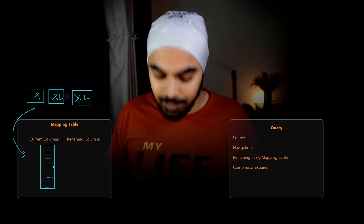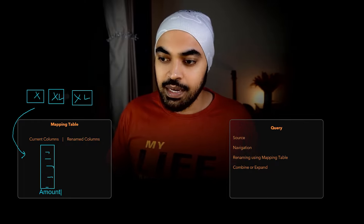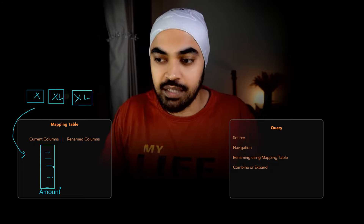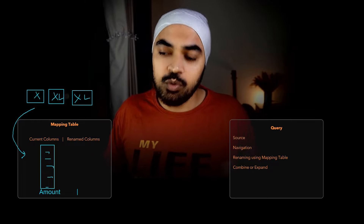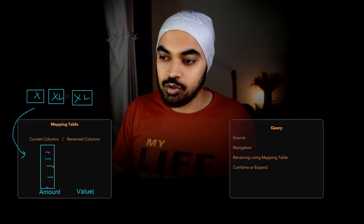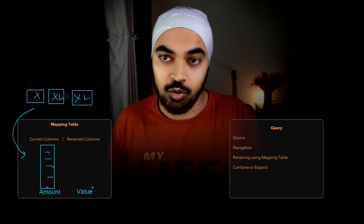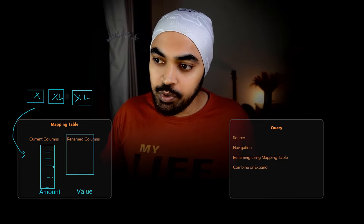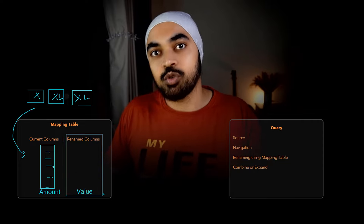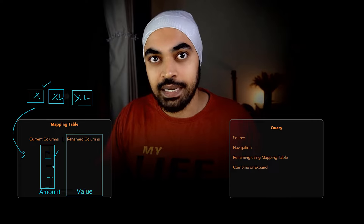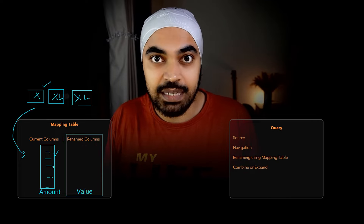Power Query automatically cannot know what you'd like to rename the column as, so you'll have to give it as an input. For example, if we have a column called 'amount,' Power Query wouldn't know what you'd like to call it finally when you present the data together. So I'm going to say: when you have the 'amount' column, I would like to rename it as a 'value' column. This rename column needs to be filled by the user, and this accumulates into a mapping table. Once created, this mapping table will be used to rename all the data coming from the Excel files, and then we'll be able to combine it.